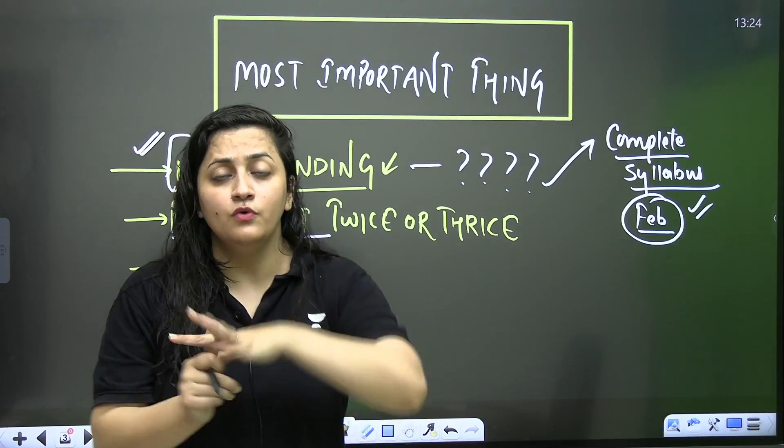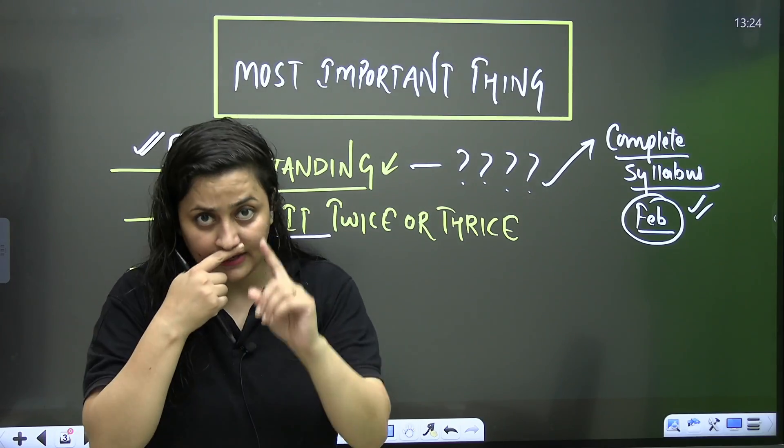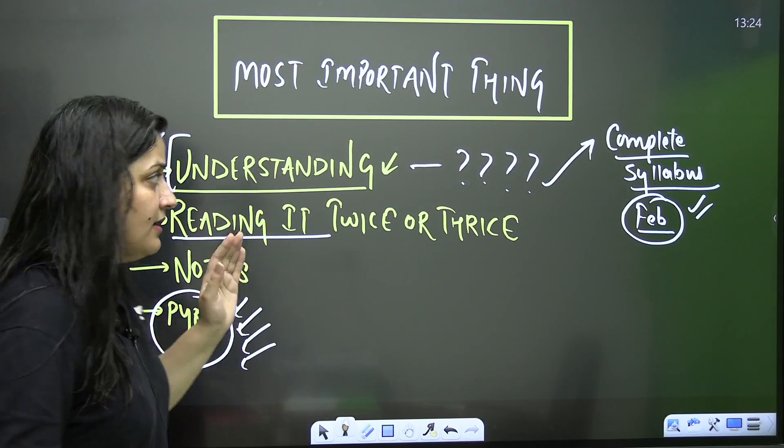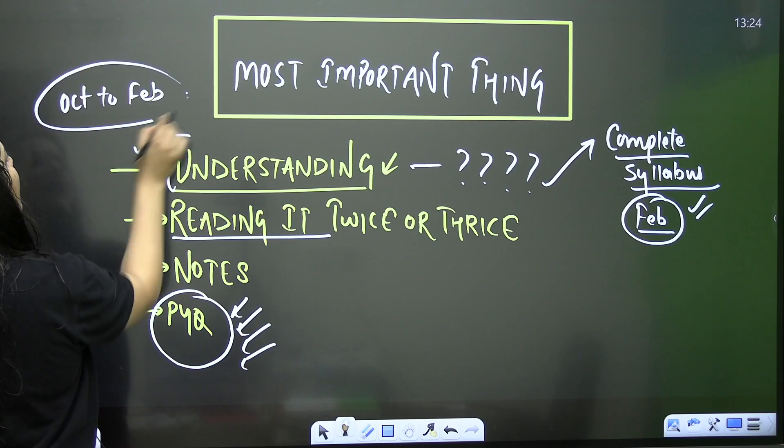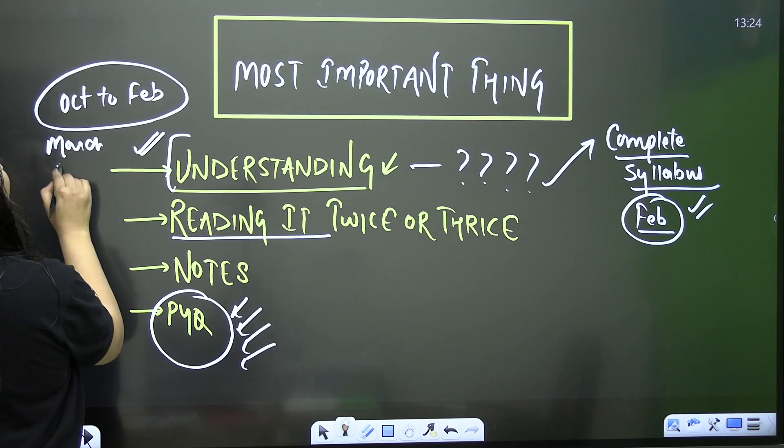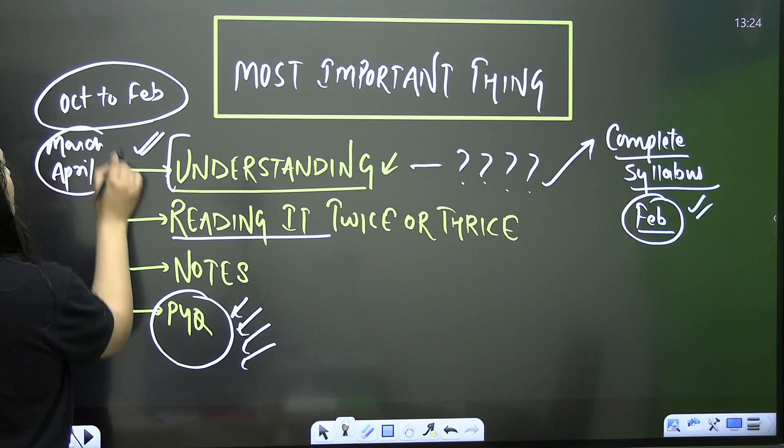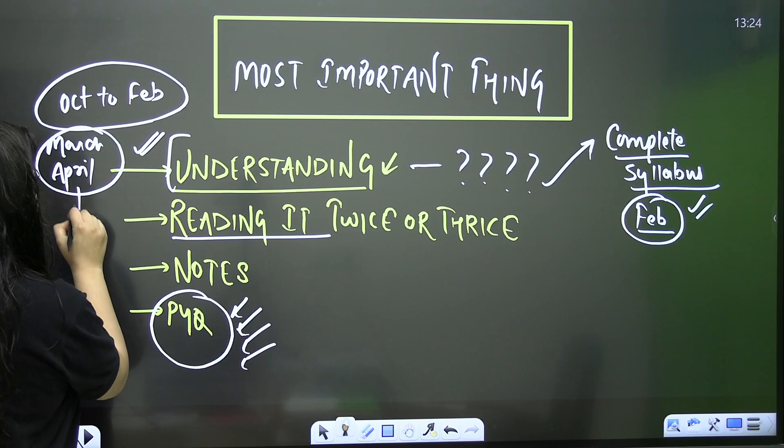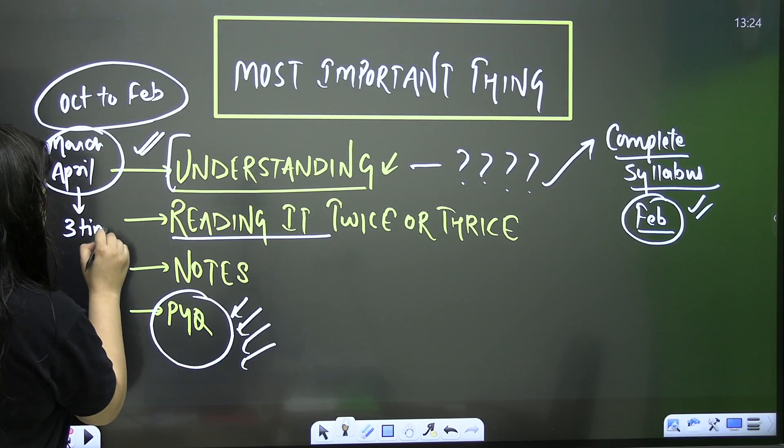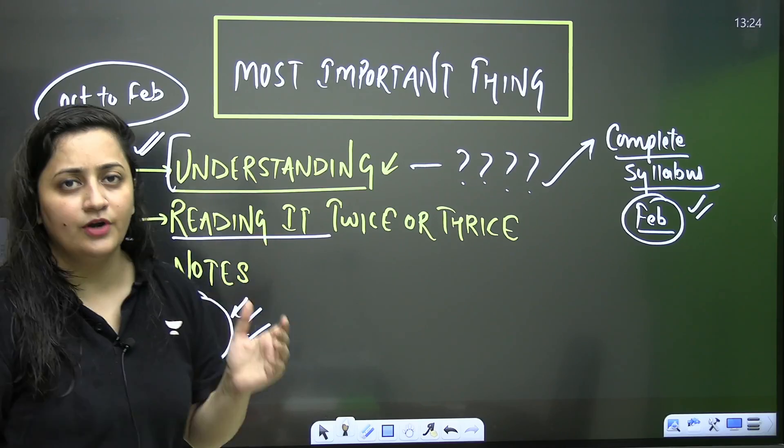Now, many of you ask me this question that how many times should we read the NCRT? The first thing is, if you are a beginner, from October to February, finish your syllabus. And then in the month of March, April, you just need to read your notes and the NCRT. Minimum for biology, minimum for three times. That's what you have to do.